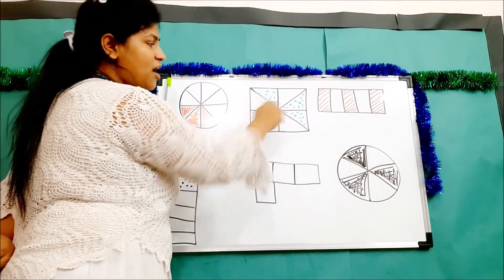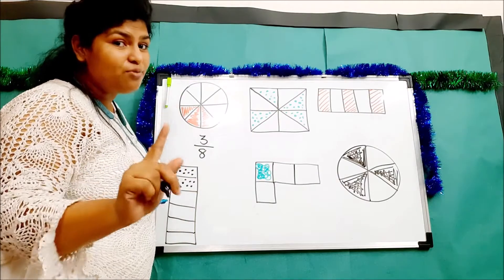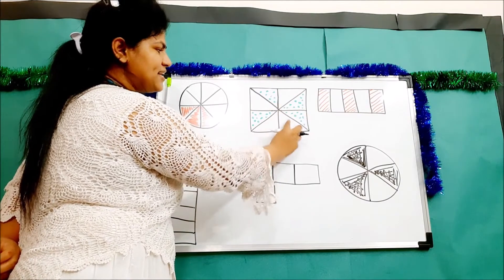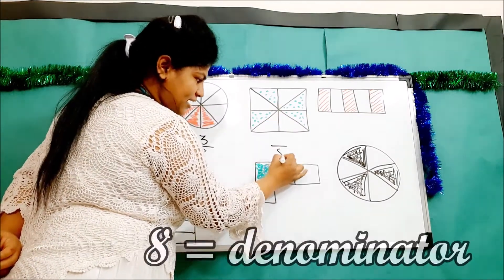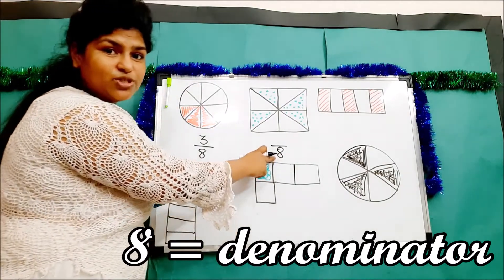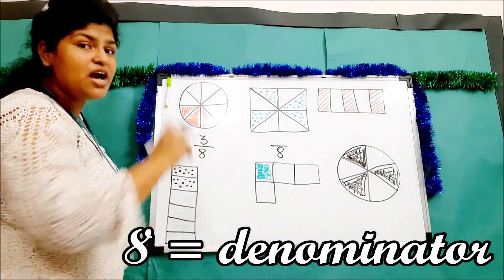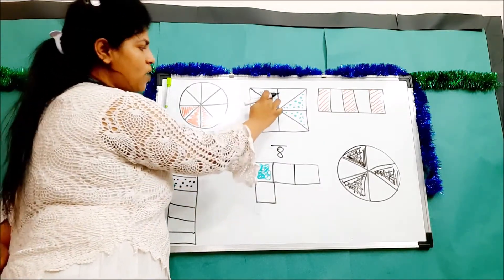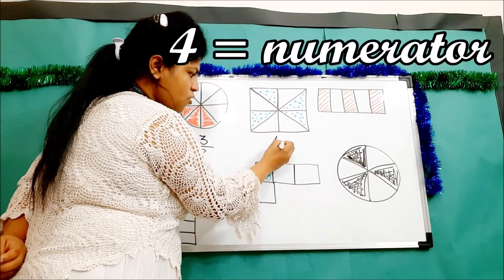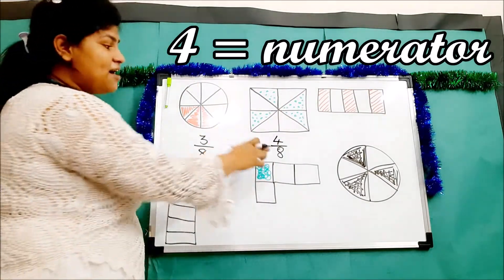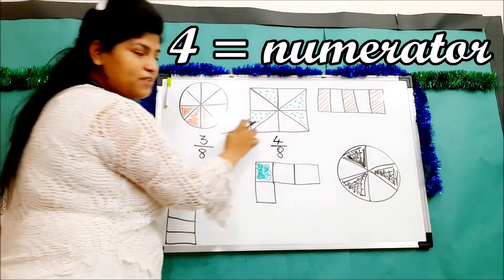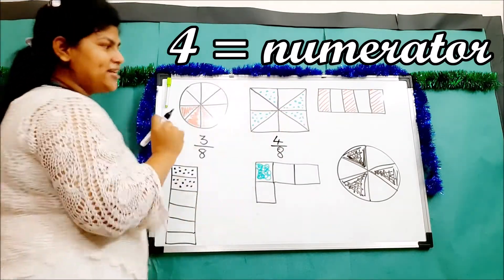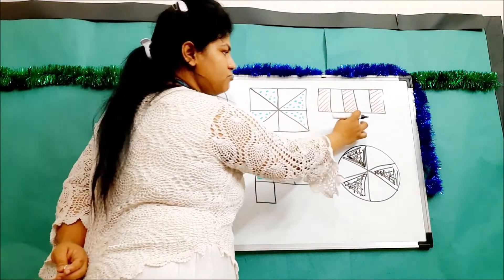Over here we have how many pieces? One, two, three, four, five, six, seven, eight - there are eight pieces. The denominator will always tell you about how many parts are there. Out of them how many are colored? One, two, three, and four. So these four colored fellows say we are four out of eight.